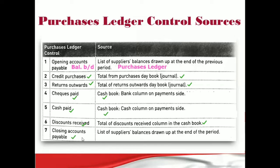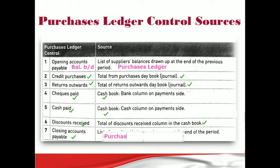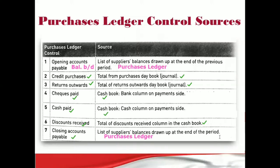The final item for the purchases ledger control is closing accounts payable — the closing balances for your creditors. This comes from a list of suppliers' balances drawn up at the end of the period, or from the purchases ledger. You go to the purchases ledger, find the closing balances for all creditors, add them together, and place that figure in the purchases ledger control account.